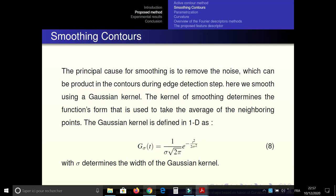The principal goal for smoothing is to remove the noise which can be produced in the contour during edge detection step. Here we use a Gaussian kernel defined as follows, where sigma determines the width of the Gaussian kernel.